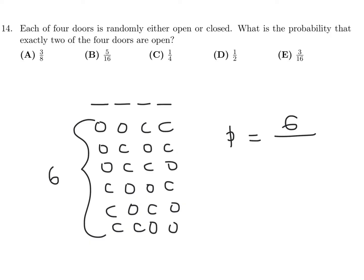For any probability question the numerator is the specific condition — 6 favorable outcomes. The denominator is the total number of cases: each door has 2 possible choices, so 2 to the 4th power is 16 total possibilities. The probability is 6 over 16, which in lowest terms is 3 over 8. So number 14 is A.